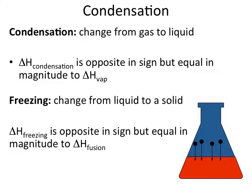Condensation and freezing are the reverse of the endothermic processes like vaporization and melting. The enthalpy of condensation and the enthalpy of freezing are equal in magnitude but opposite in sign compared to their reverse processes. These are exothermic — heat is lost to condense a gas back to liquid or freeze a liquid to solid. The amount of energy is the same; it just has to be released in these processes.